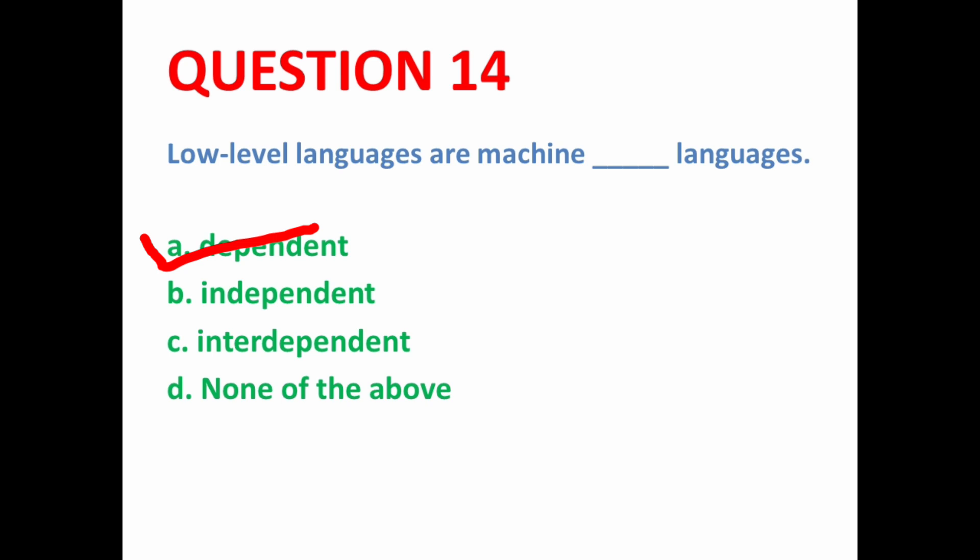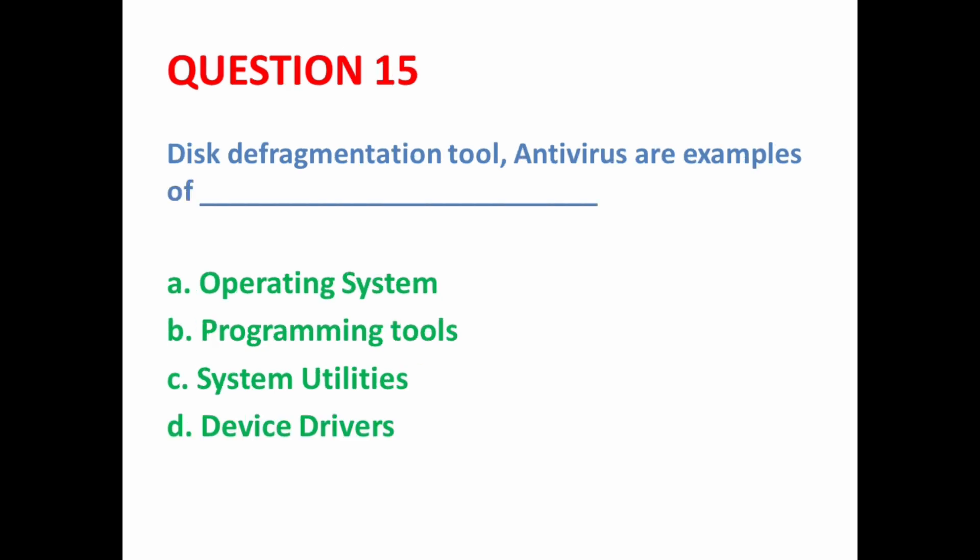Next MCQ: Disk defragmentation tool and antivirus are examples of dash. These are not operating system tools, nor programming tools. These are system utilities — programs which are used to analyze and maintain a computer system and increase its performance. So here option C is the correct option.